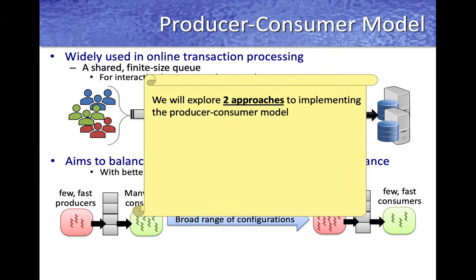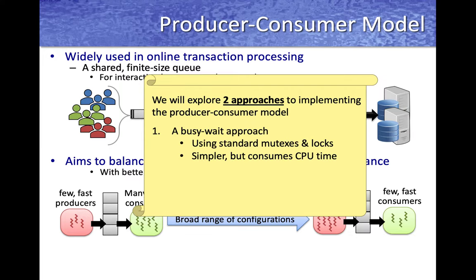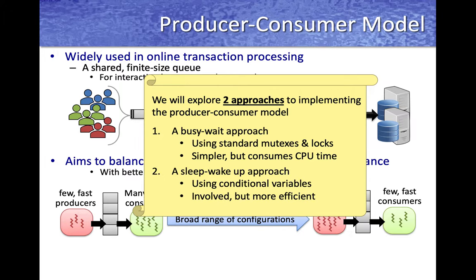In this presentation, we will explore two different approaches to implementing the producer-consumer model, keeping examples simple with just one producer and one consumer. First, we'll look at a busy-wait approach — simpler, using a standard mutex, but consuming a little more CPU. Then we'll look at a sleep-wakeup approach using condition variables, which is a little more involved but more efficient than the busy-wait approach.